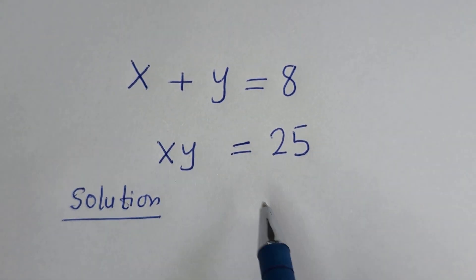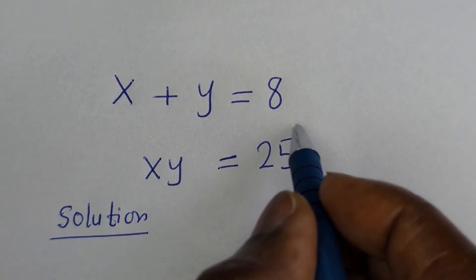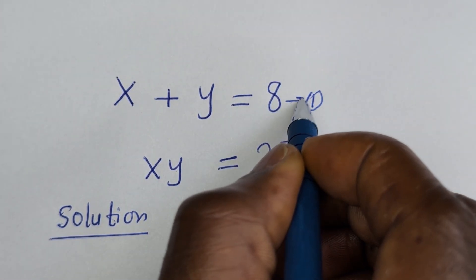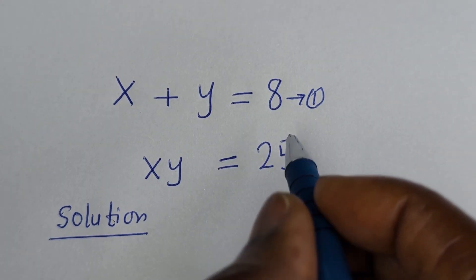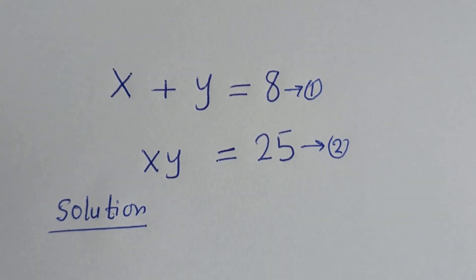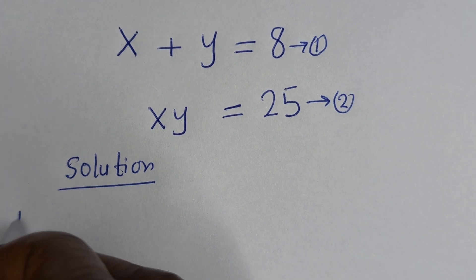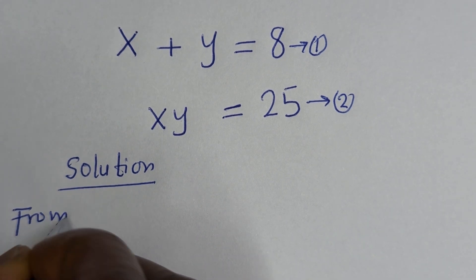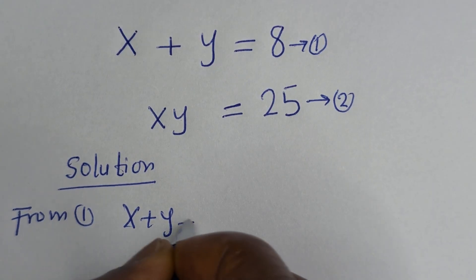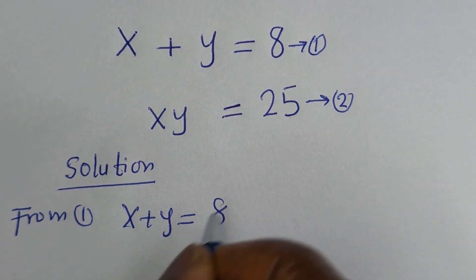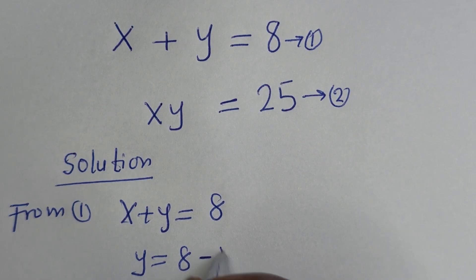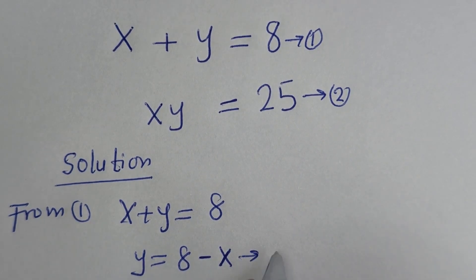S plus Y is equal to 8 — let us call this equation 1. S times Y is equal to 25 — let us call this equation 2. Then from equation 1, S plus Y equals 8, so Y is equal to 8 minus S. Let us call this equation 3.